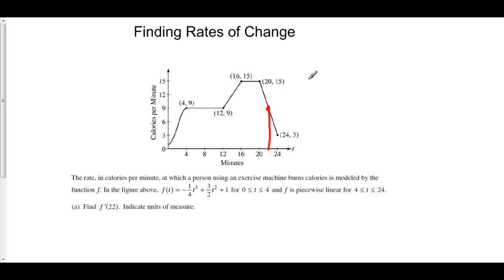And so the slope of this line is given by (y₂ - y₁) over (x₂ - x₁). Three minus fifteen is negative twelve over twenty-four minus twenty is four. This is equal to negative three.